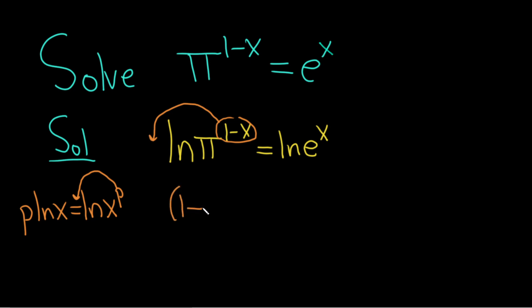So this is (1-x) times the natural log of π and that's equal to... here's a very powerful formula. If you have the natural log of e^x, this is just x. So this goes away and you just get x.